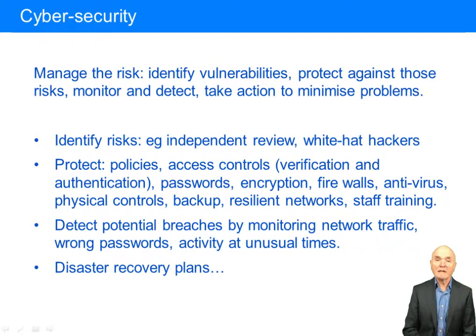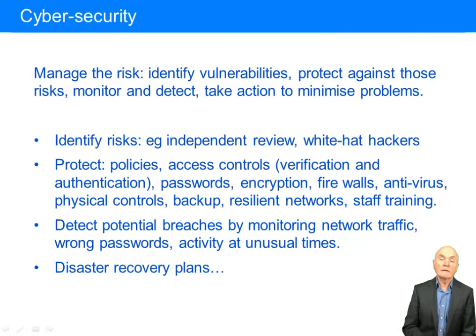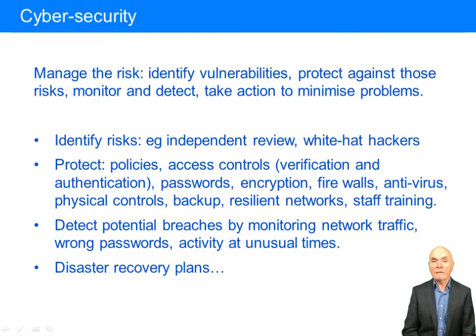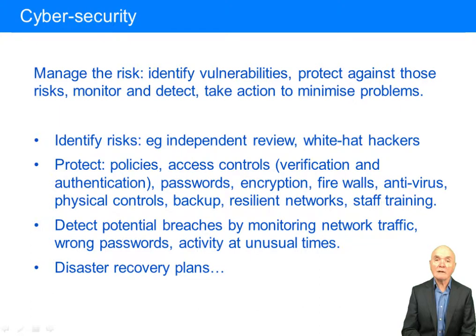So how can we identify risks? Well, one of the ways you can identify risks is to keep a record of what's gone wrong, have people reporting when there was a problem with something to do with IT. But apart from that, you can have independent reviews, which could be carried out either internally or externally.